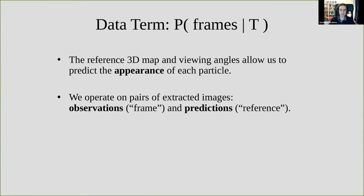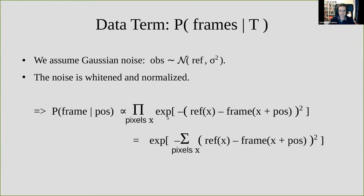To construct the data term, we need to know what the particle looks like — a high-resolution 3D map of the particle, as well as approximate positions, angles, defoci, beam tilt, and everything needed to predict what the particle would look like without noise. We operate on small extracted images: pairs where one is the observed frame and the other is the prediction. Since we assume the only difference between prediction and observation is noise, we model this noise as Gaussian. We measure the power spectrum of the noise and filter both prediction and observation so that the noise in the observation becomes white — flat power spectrum.